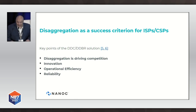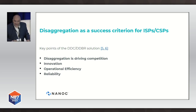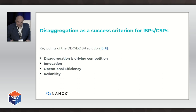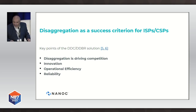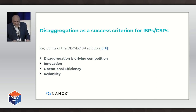Disaggregation as a success criterion for ISPs: some of the key points are that disaggregation is driving competition. We're seeing a lot of opportunities now for new players and new vendors to enter the market, which is driving costs down and creating more competition — this is breeding innovation. There's open software and open hardware that improves flexibility and breeds innovation while reducing time to market. This model also allows operators to purchase capacity incrementally as it's needed. Operational efficiency — taking advantage of centralized control and monitoring tools — will increase reliability, always targeting higher availability and multi-level redundancy while minimizing blast radius impact to decrease customer impact and outages.